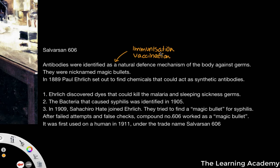If you get injected with a weaker, dormant, or dead version of an infection, your body will create antibodies that fit that one disease and help to destroy it. So next time, if you actually get it for real, the body can produce those antibodies really, really quickly. And they were nicknamed magic bullets.